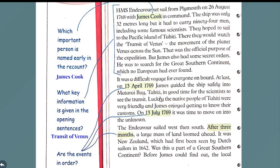Just look at the dates and the year. The year and date are the same, but the months are different. This is April and this is July. Let's see if the order of the months is correct or not. April comes first and then July, and July comes after April. So yes, the events are in order.